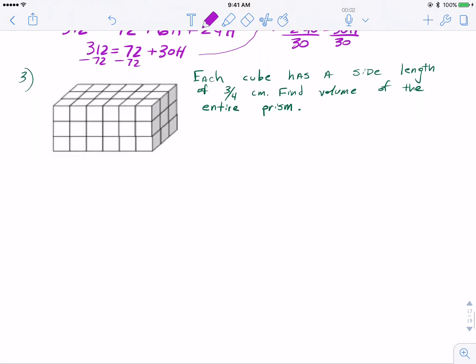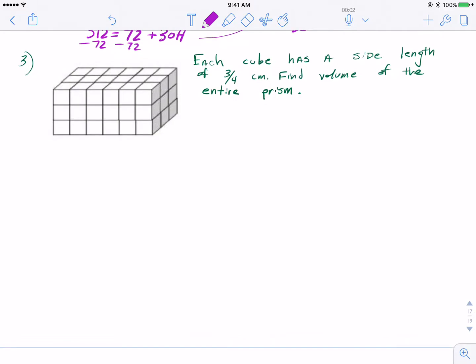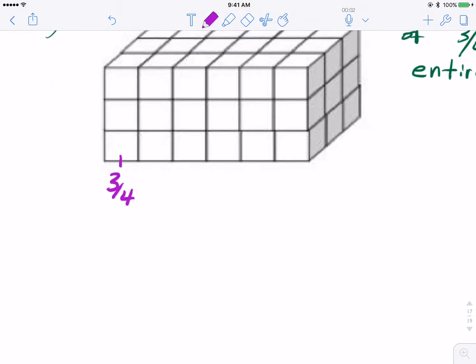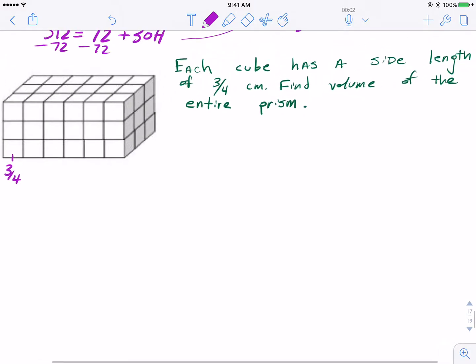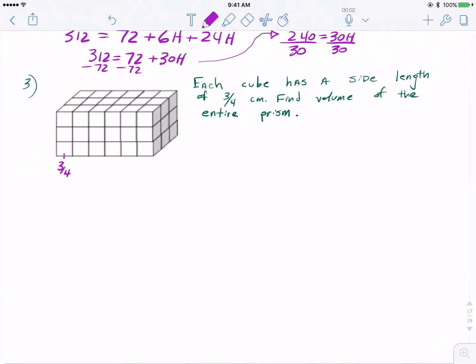We'll take a look at one last problem here. We have a little visual representation of a box broken up into cubes. It says each cube has a side length of 3 fourths of a centimeter. Be careful, it's not saying that the volume is 3 fourths for each cube, it's saying, literally, these are cubes, so we could think of this like a 2D square right here. Every side is 3 fourths, and we want to ultimately find the volume of the entire thing.